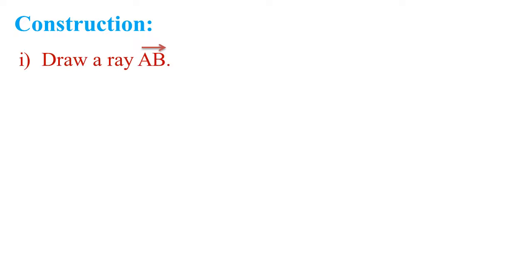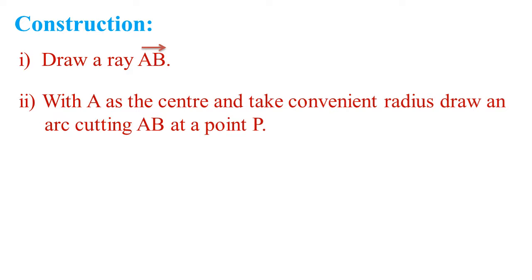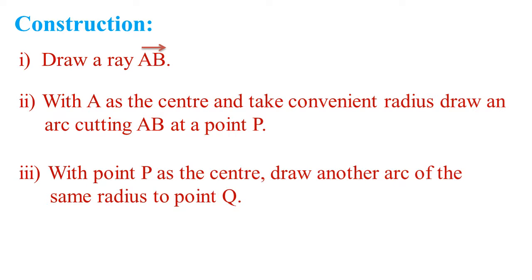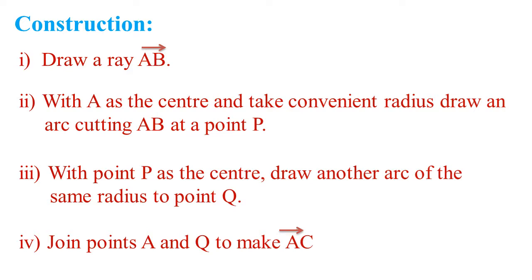Now let us write the construction following the above steps. First: Draw a ray AB. Second step: With A as the center and take a convenient radius, draw an arc cutting AB at a point P. Third step: With point P as the center, draw another arc of the same radius to point Q. Step 4: Join point A and Q to make the ray AC.